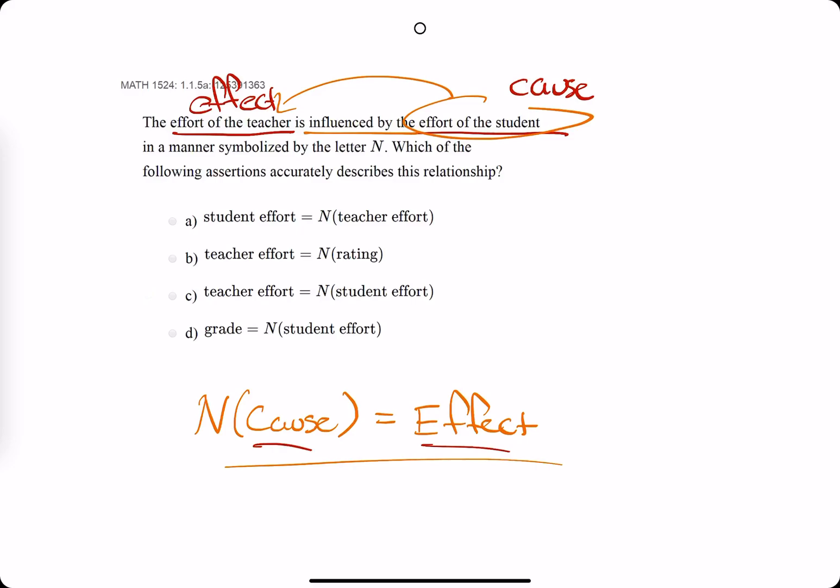The cause is the effort of the student. So we're looking for effort of the student inside the parentheses. Not here. Not here. That's looking good. That's looking good. Then we want the effect or the thing on the opposite side of the equation to be the effort of the teacher. This does not have it. This does. Bring out our eraser. That is the correct answer.